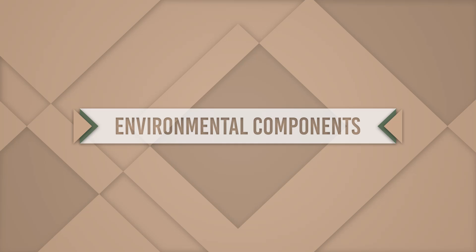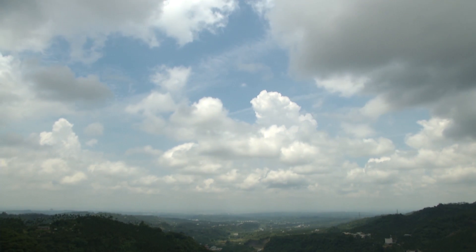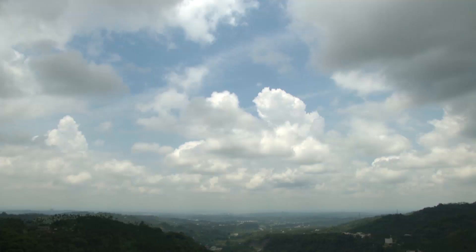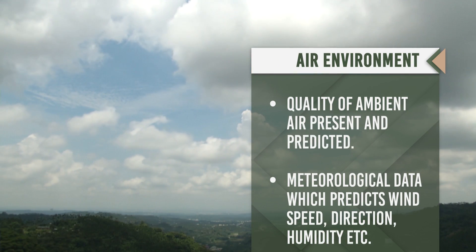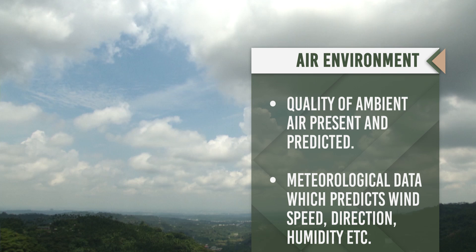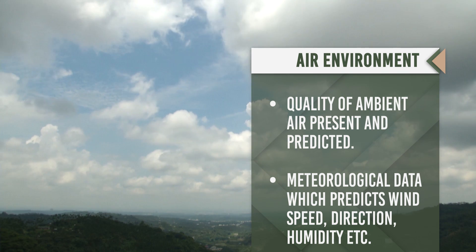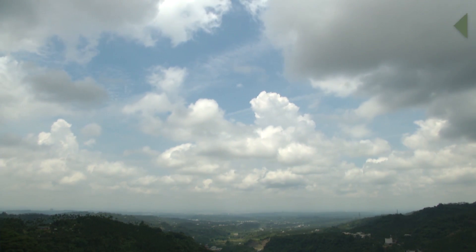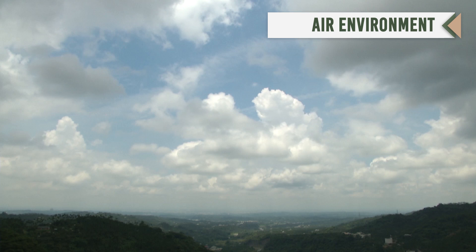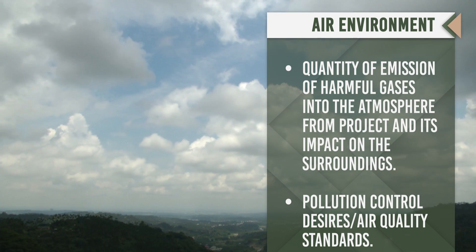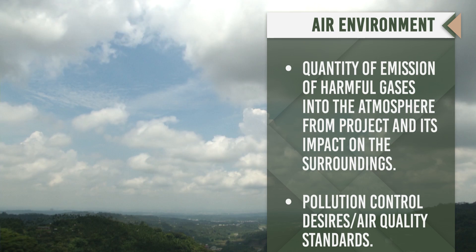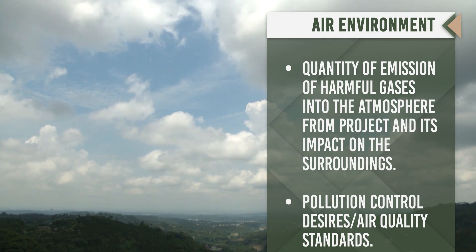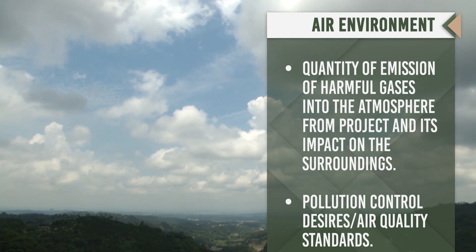Environmental components of the EIA: The EIA process looks into the following components. Air environment: quality of ambient air present and predicted; meteorological data which predicts wind speed, direction, humidity, etc.; quantity of emission of harmful gases into the earth's atmosphere from the project and its impact on the surroundings; and pollution control requirements or quality standards.